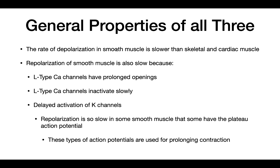These factors explain why smooth muscle action potentials are slower than those in skeletal and cardiac muscle. Notably, repolarization can be so slow that some smooth muscles produce the plateau action potential, which is important because it enables prolonged contractions. Those are the general properties shared by all three action potential types.